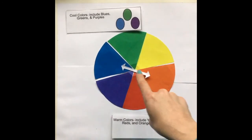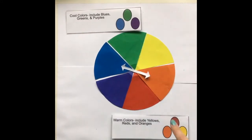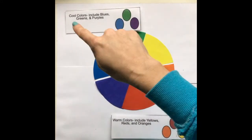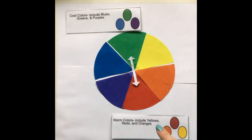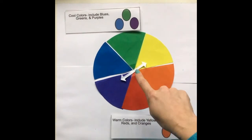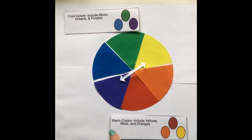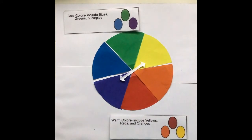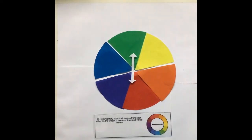Cool blue and warm orange sit across from each other on the color wheel. They are complementary colors. Cool green and warm red sit across from each other on the color wheel. They are complementary colors. Cool purple and warm yellow sit across from each other on the color wheel. They are complementary colors.